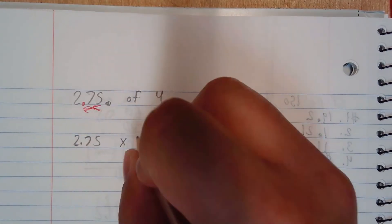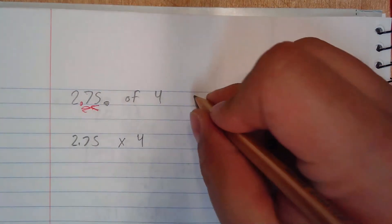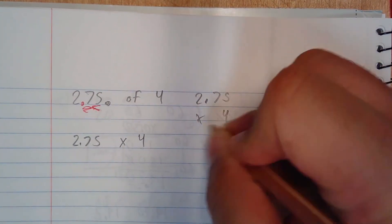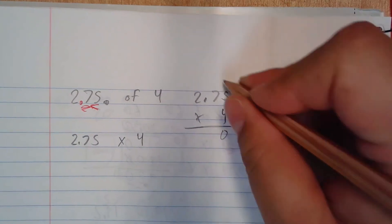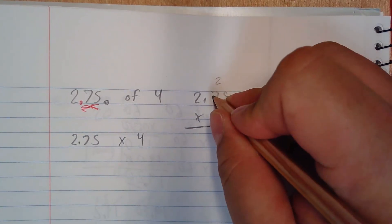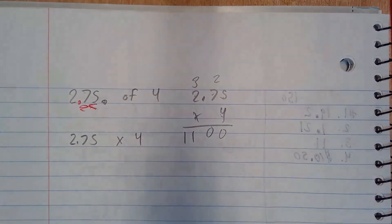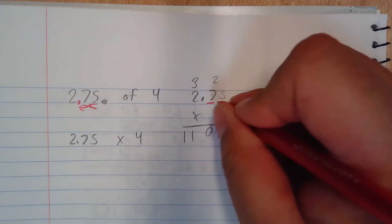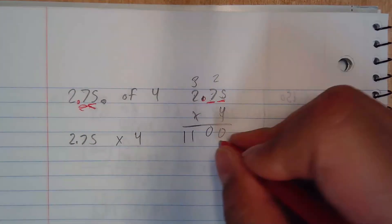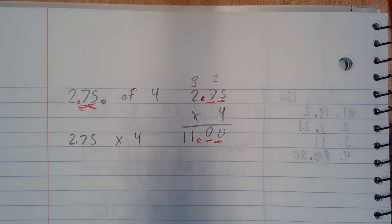I took away the percentage symbol and put the decimal point, moving two spaces to the left: one, two. So 2.75 times 4. This has three digits, it's only one. Four times five is twenty — carry the two. Four times seven is twenty-eight plus two is thirty. Four times two is eight plus three is eleven. I have two decimal place values to consider: one, two. The answer is eleven.